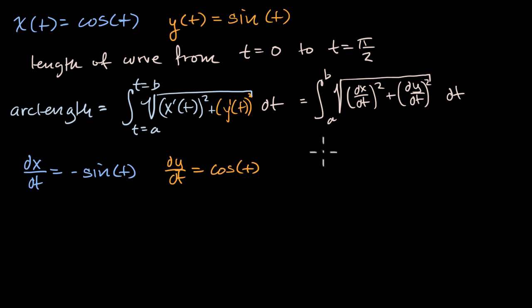So our arc length up here is going to be equal to the integral from t is equal to zero to pi over two. That's what we care about. Our parameter's going from zero to pi over two of the square root of the derivative of x with respect to t squared. That's negative sine of t squared. Well, if you square it, the negative's going to go away. So I could write this as sine squared of t, and then dy/dt squared, that's just cosine squared t, plus cosine squared t, and then we have our dt out here.